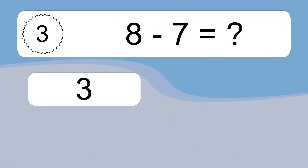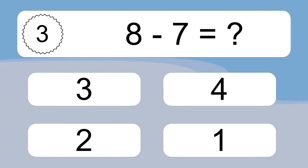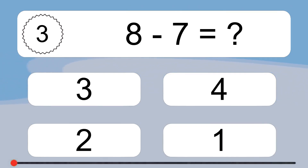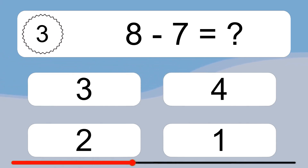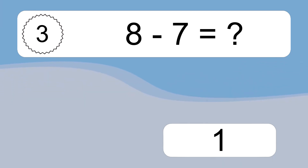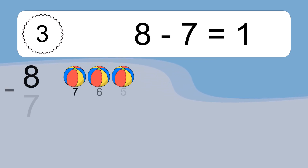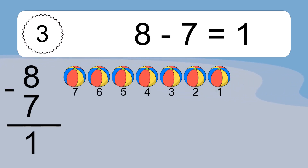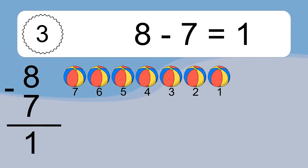8 minus 7 equals what? 8 minus 7 equals 1. Let's count it: 7, 6, 5, 4, 3, 2, 1.